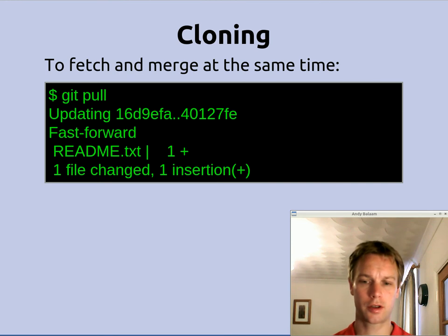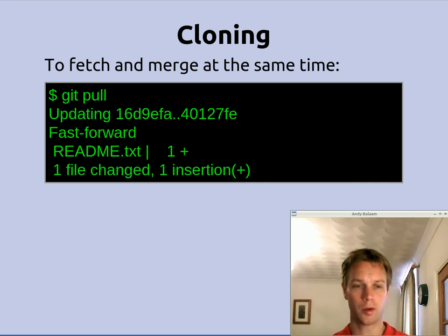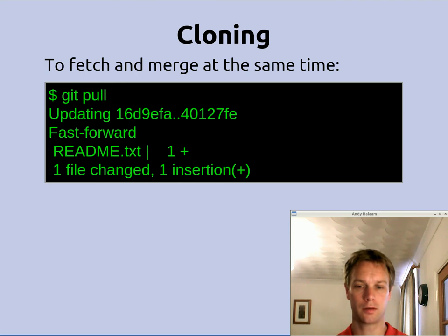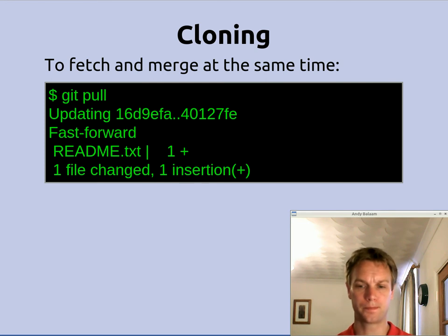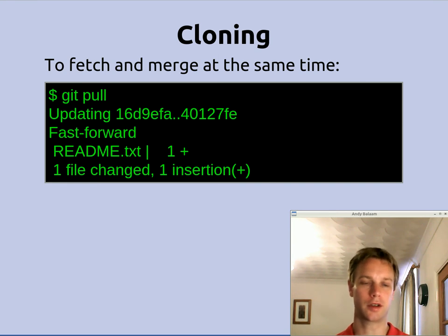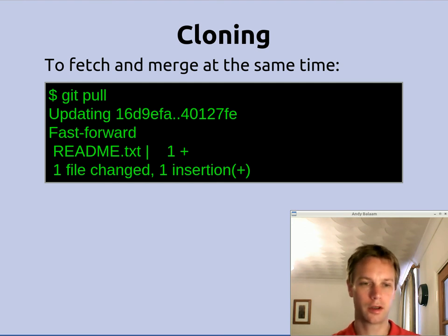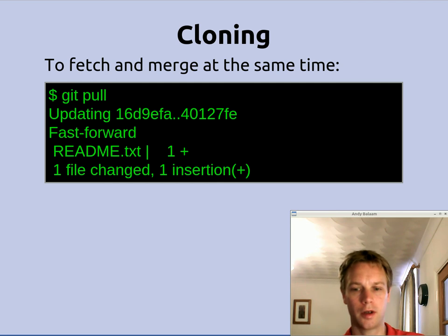That fetch and then merge - there's one command that does both of those things, because that's something you often want to do, and that's called pull. If you do a git pull and don't specify what remote to pull from, it will default to pull from the origin remote. In the background what it's doing is a git fetch to update your mirror of that repository, and then a git merge origin to merge what it's just updated into your working tree. That's the way you would stay up to date with a project. Get the URL, do a git clone, and when you want more recent code, do a git pull.